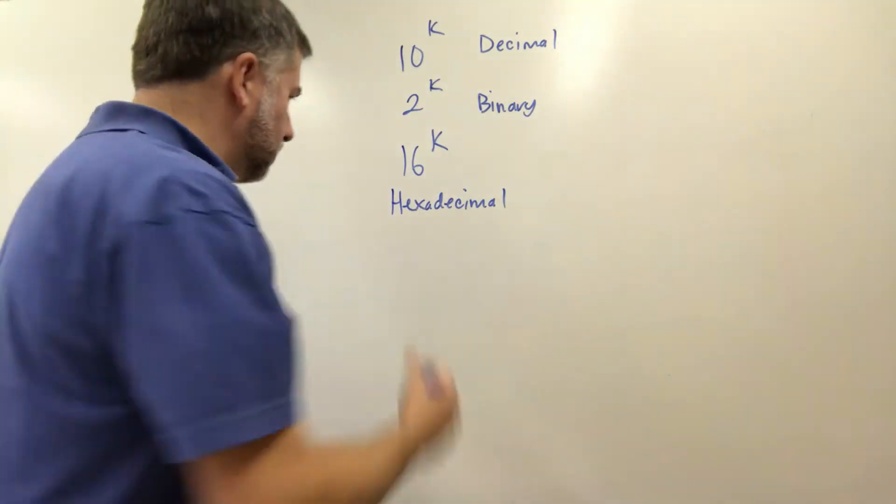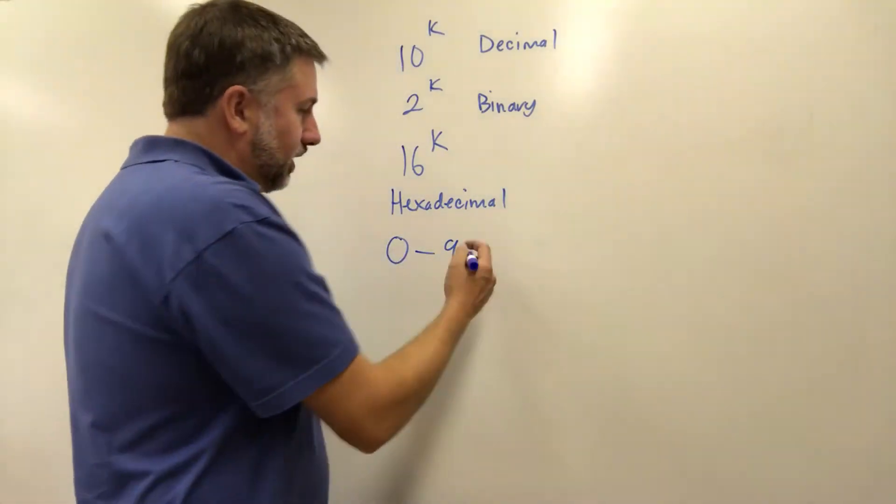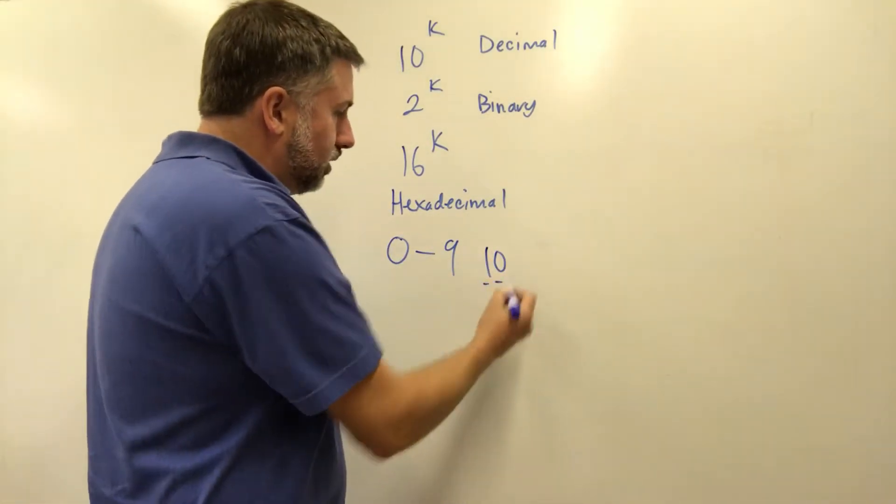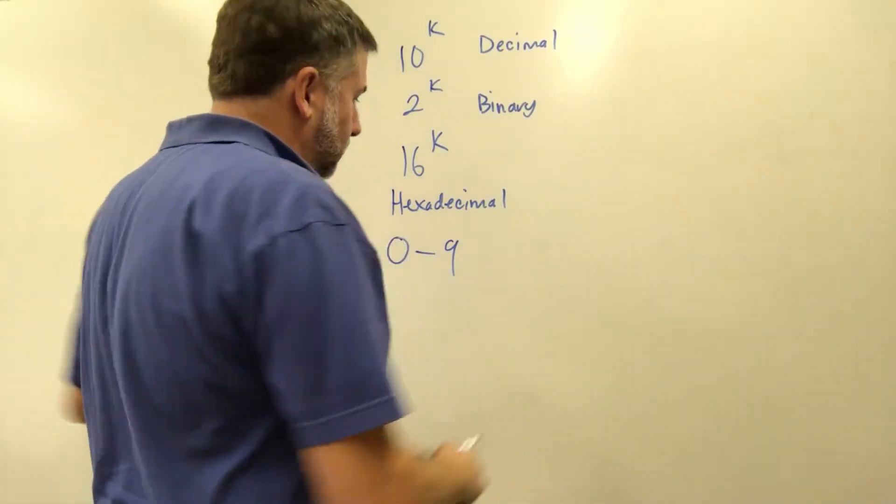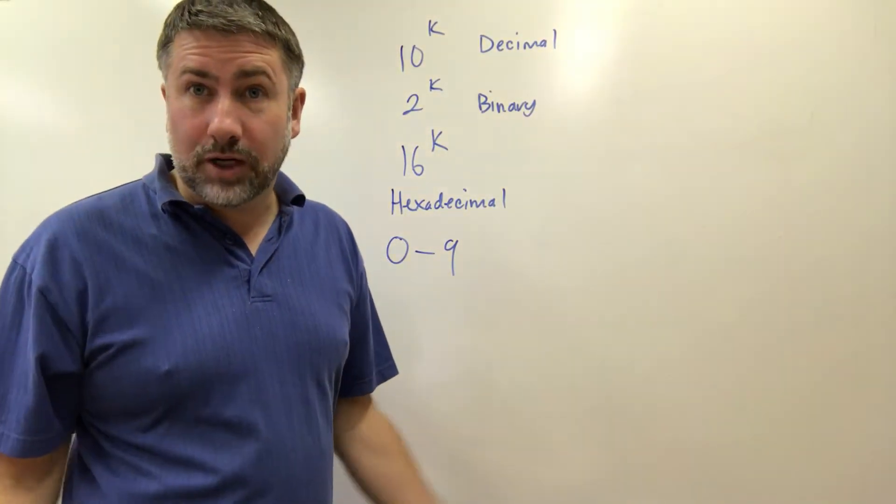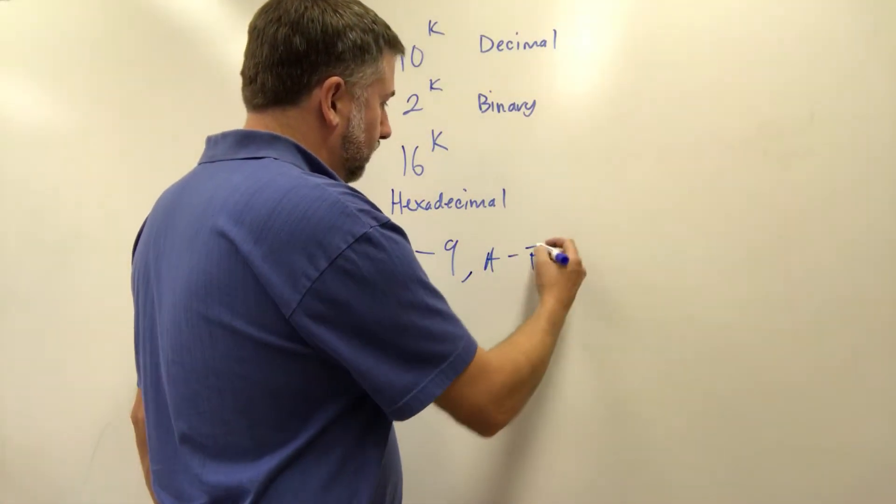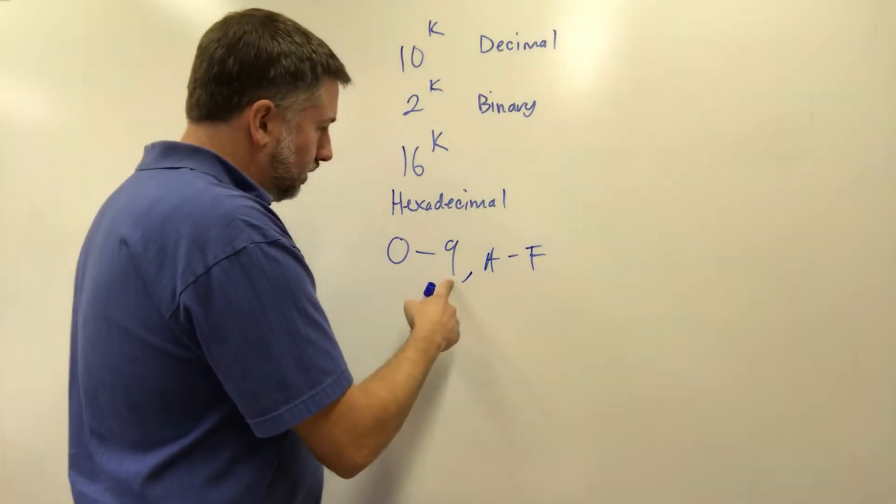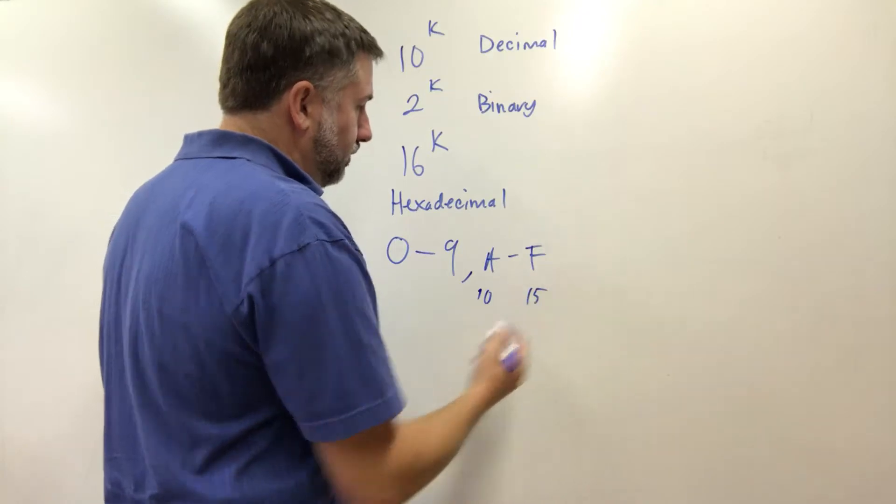What symbols should we use? Well we use zero through nine by convention and then we start counting after that. Now we can't use the number ten because that's two symbols, a one and a zero. So instead we use some other symbol. Now you could use any symbols you want but we are going to use letters A through F. So zero through nine correspond to zero through nine. A is ten and F is fifteen.